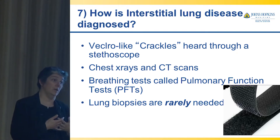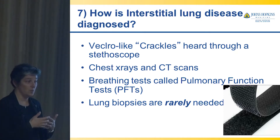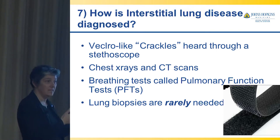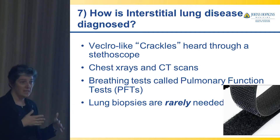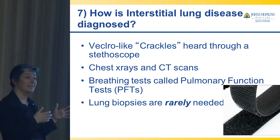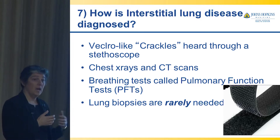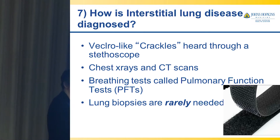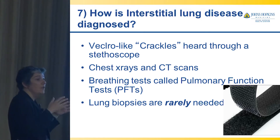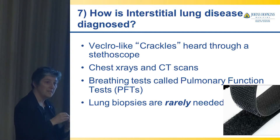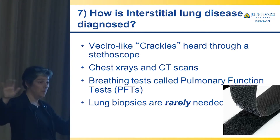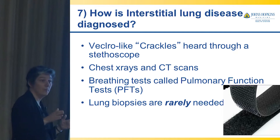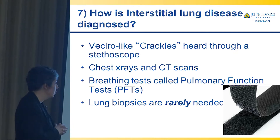Some of you here have myositis with an associated antibody that puts you at higher risk. Those tend to be things like the antisynthetase antibodies — Jo-1, PL-7, PL-12, EJ, OJ — or antibodies like MDA5. We know that some patients who have a Ro antibody will also end up with interstitial lung disease. So the likelihood for people with myositis is much greater than in the average population, but it's not 100% — certainly not everybody who develops myositis will develop interstitial lung disease.